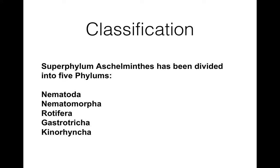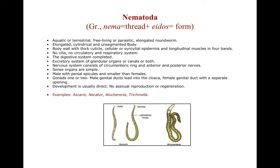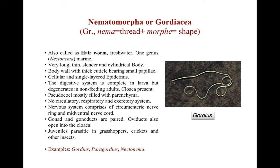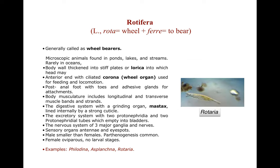So this is all about the classification of Ecdysozoa. Ecdysozoa is a superphylum divided into five phyla. First is Nematoda — examples are Ascaris, Wuchereria bancrofti, and Trichinella. Then Nematomorpha, also known as Gordiasia or hairworms — examples are Gordius, Paragordius, and Nectonema. Then Rotifera, known as wheel bearers because of their ciliated corona — the wheel organ used for feeding and locomotion — examples are Philodina, Asplanchna, and Rotaria.